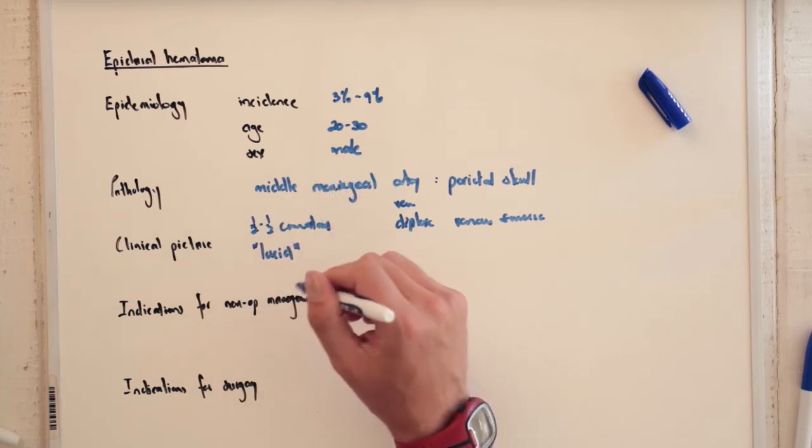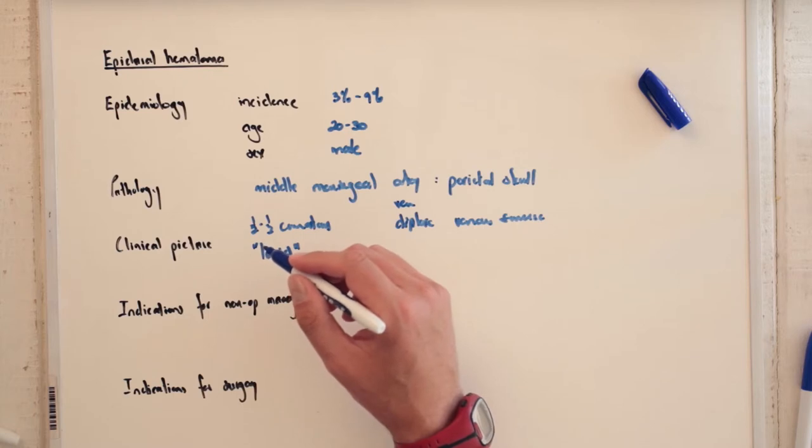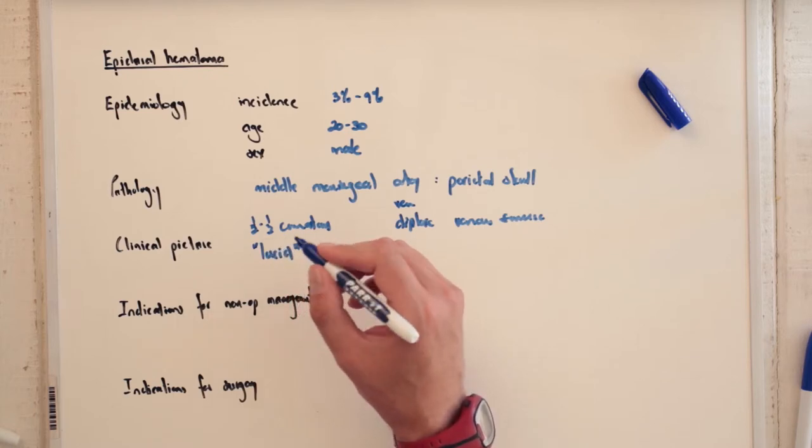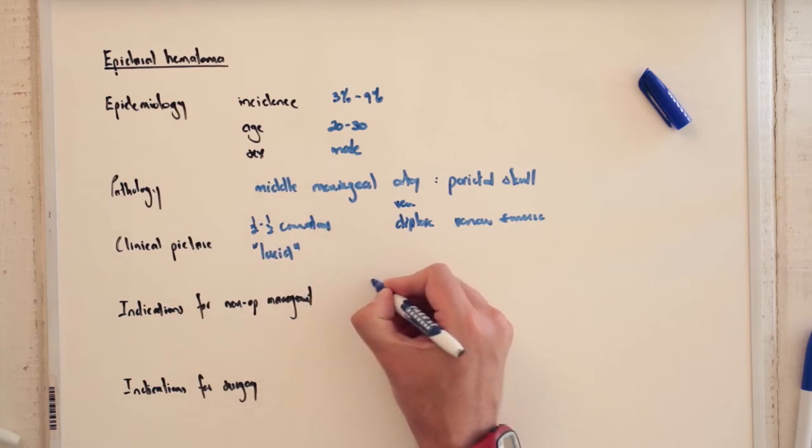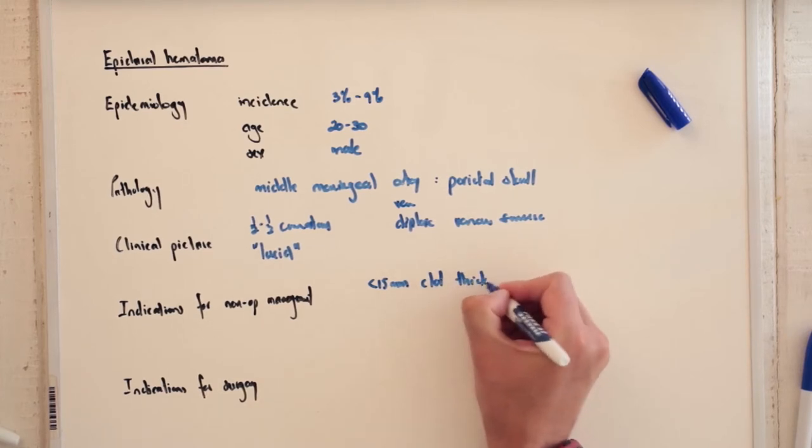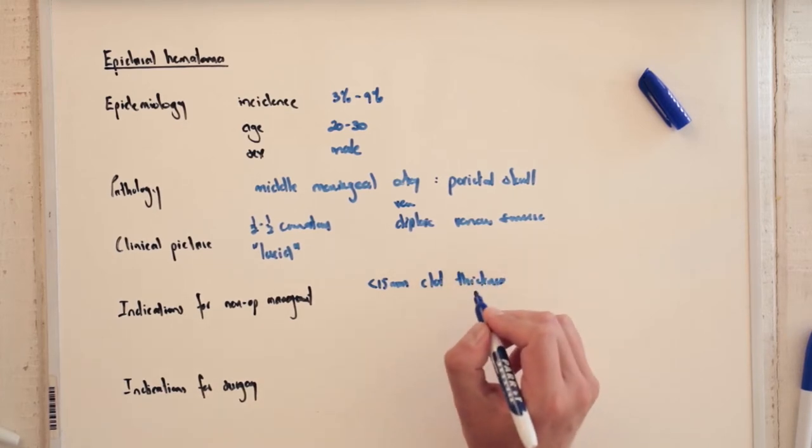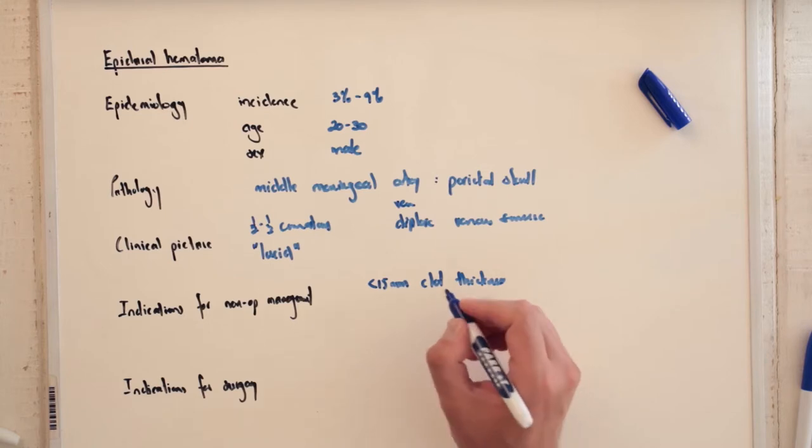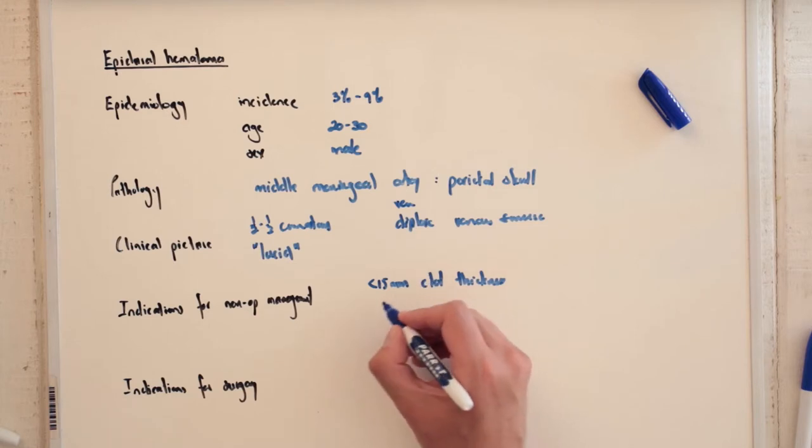If we want to list specifically the indications for non-operative management of these patients, we really do want them to have a clot thickness of less than 15mm, or if we look at the volume of less than 30ml.